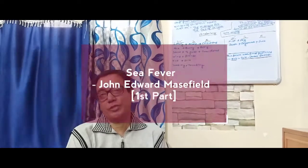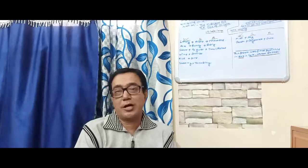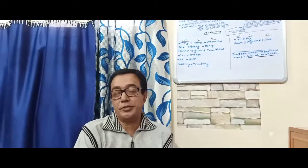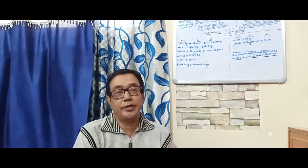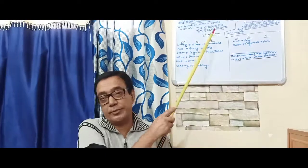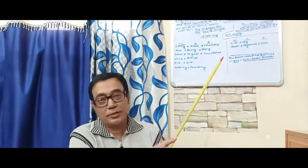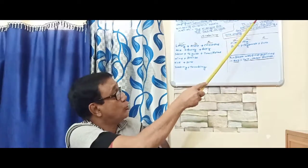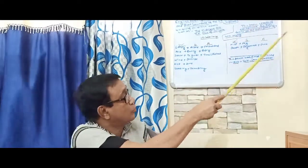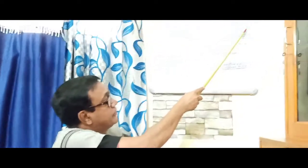Dear students of class 10, please concentrate and give your attention to the poem which I intend to read and teach you today. The name of the poem is given on the board — Sea Fever. The name of the poet is John Edward Masefield, who was born in 1878 and died in 1967.